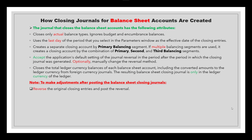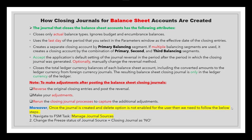To make adjustments after posting the balance sheet closing journals, for normal journals you have to reverse the original journals, post the reversal, make your adjustment, and then rerun the closing journal process to capture the additional adjustments. Once this journal is created, it will be unposted. The delete option is only available for journals that are still unposted. If the delete option is not enabled, you need to check the journal sources setup — go to manage journal sources, select closing journals, and check the freeze journals status.